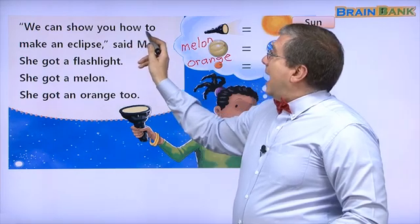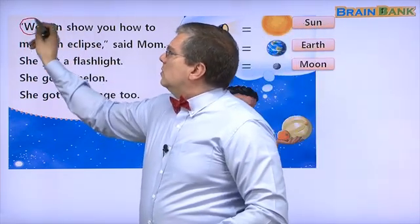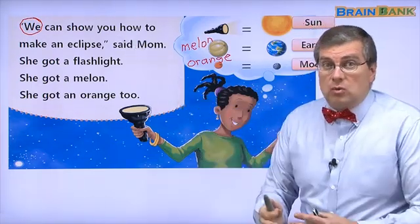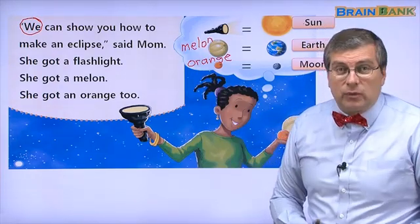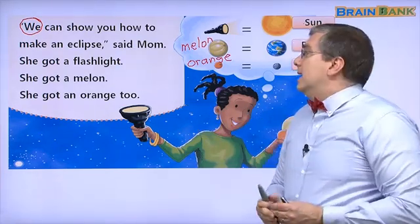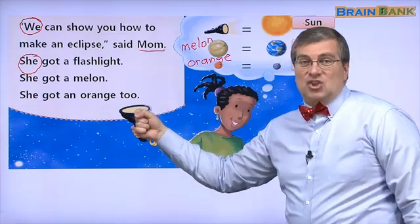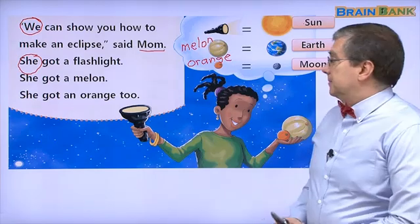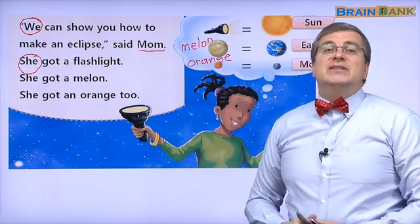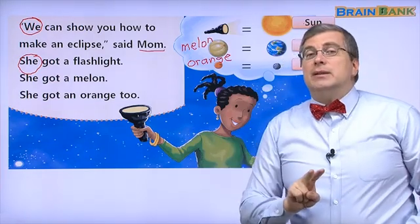Let's read together. 'We can show you how to make an eclipse,' said mom. We — who is 'we'? Mom and dad. We can show you how to make — 어떻게 만들어요? — an eclipse. She got a flashlight, she got a melon, she got an orange. Three things: a flashlight, a melon, and an orange.